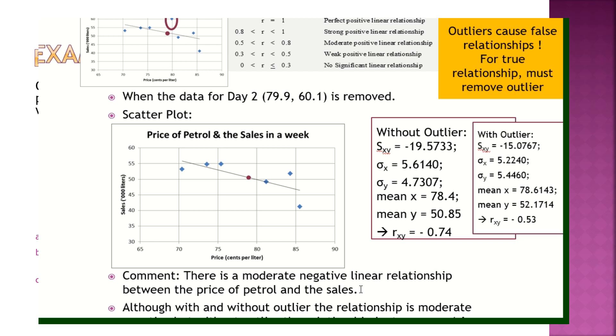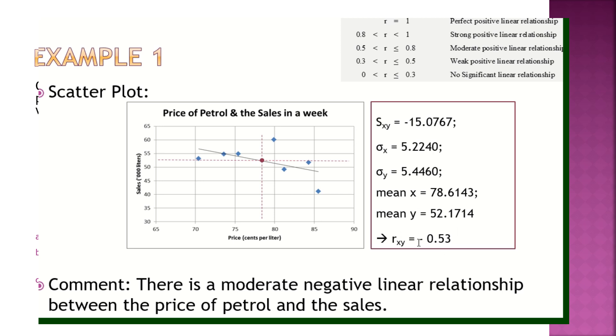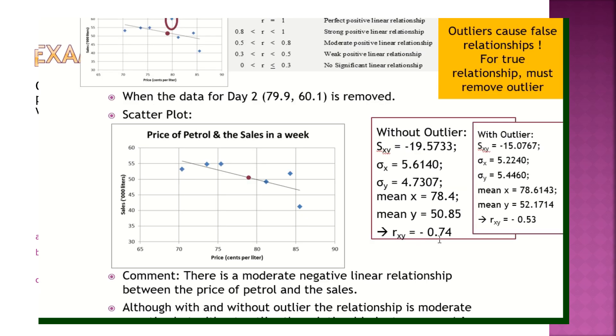So whenever they ask you, what is the effect of outlier? Please write this down. What is the effect of outlier on the correlation coefficient? Standard answer. Outlier caused false relationship. Because just now the outlier, with the outlier gave you negative 0.53, right? When you take out, it gave you negative 0.74. It's the correct relationship. So whenever the question will ask you, what is the effect of outlier? Your answer must be the effect of the outliers cause false relationship. This is a standard question. It always comes out in the exam. I only want to see this answer. Outliers cause false relationships. Everybody okay?